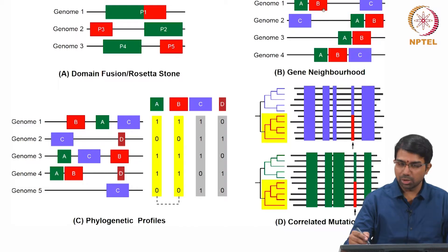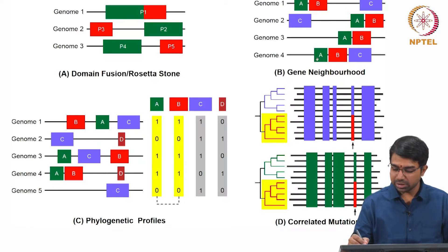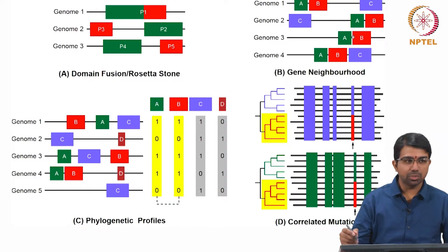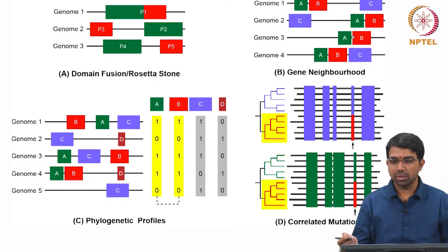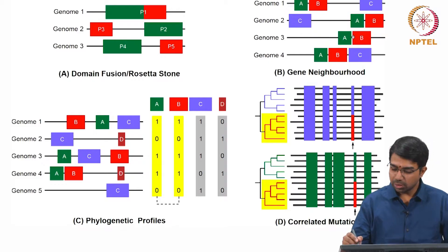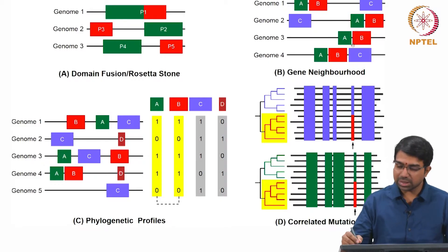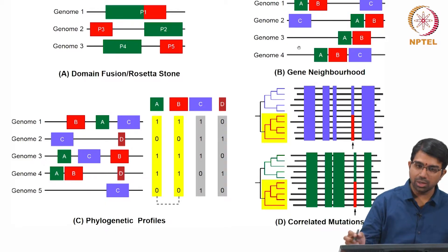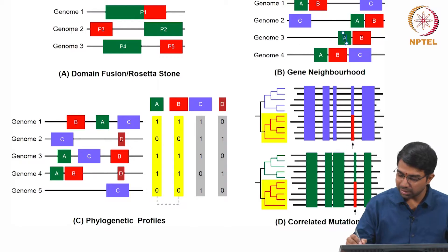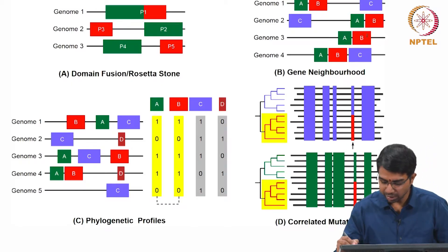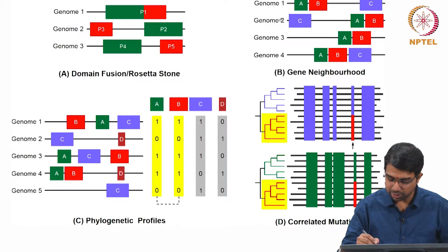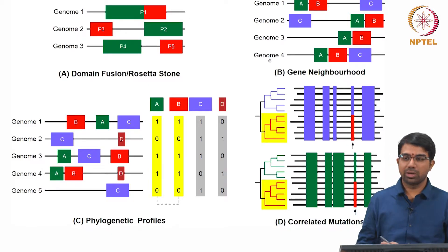The next concept involves gene neighbourhood. What we find is that some proteins share the same neighbourhood. If you see A and B always occur in the same neighbourhood — C may or may not occur with A and B, but when A occurs, B always occurs somewhere close to it. They could be in the same operon. You find proximity across several genomes. A and B occur together in organisms 1, 2, 3, and 4. Based on this strength, you may say that A and B actually interact.